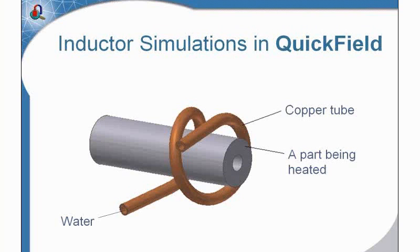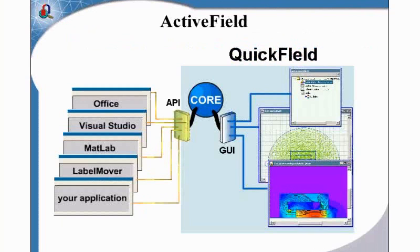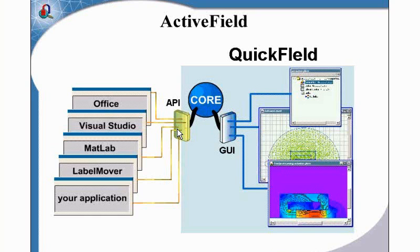I work with QuickField through its graphic user interface using keyboard and mouse, but it's also possible to work with QuickField through its programming interface. We call this interface the Active Field. You can control QuickField from within other Windows applications, including your own application or, for example, Office Macros. All actions you do through the graphic user interface are available in the programming interface. We utilize this interface ourselves when developing add-ons to the QuickField core package.